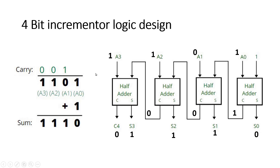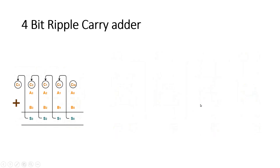So we place one half adder at each bit position — four half adders total. A0 and the fixed input 1 are applied to the first half adder on the LSB side. For our example value 1101: 1+1 gives S0=0 and carry=1, which goes to the next half adder. There, 1+0 gives sum=1 and carry=0. Then 0 goes to the third half adder: 1+0 gives sum=1, carry=0. Finally, 0+1 gives S3=1 and C4=0. This is our final result.